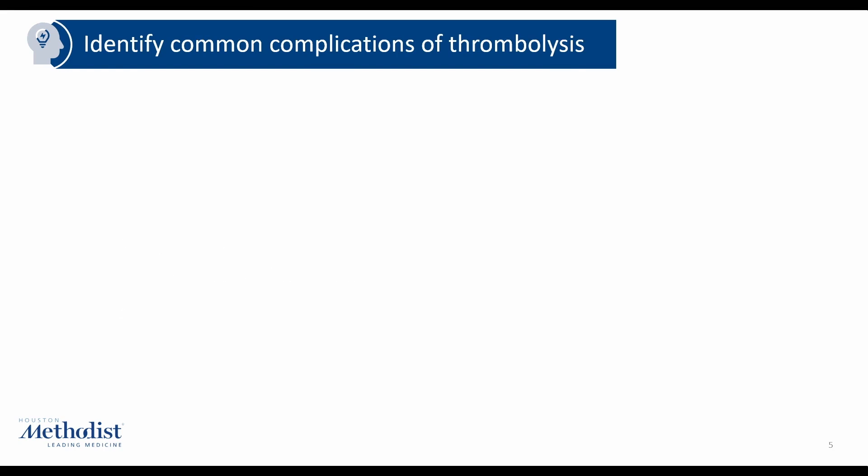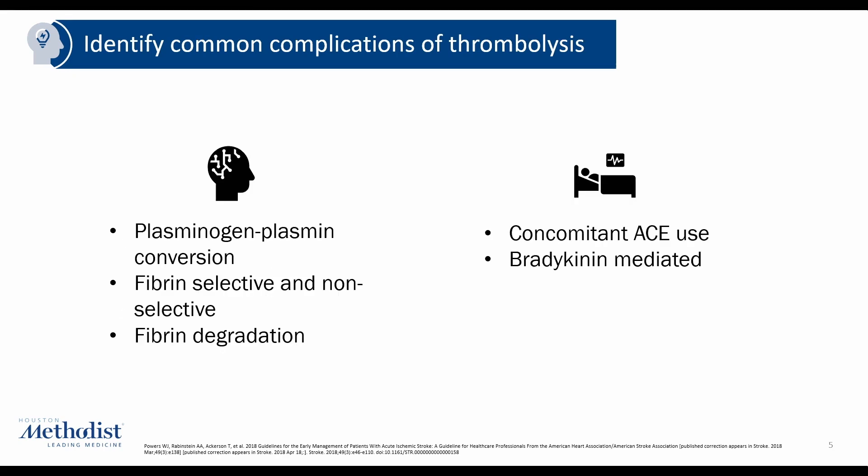Briefly, the pathophysiology helps us understand management. Thrombolytic therapies work by converting plasminogen to plasmin, which allows fibrin degradation and breakdown of clots. There are thrombolytics that are fibrin-selective and non-selective, since fibrinogen and fibrin are both responsible for clot formation. TPA and TNK are fibrin-selective thrombolytics, whereas streptokinase and urokinase are non-fibrin-selective.